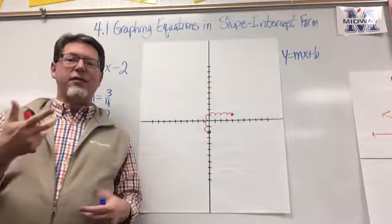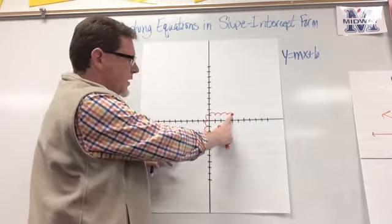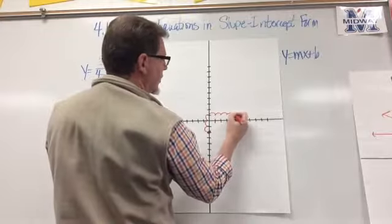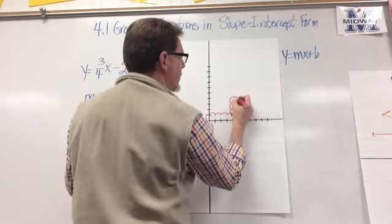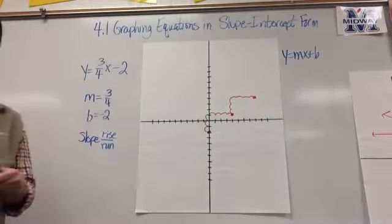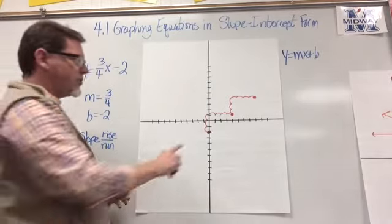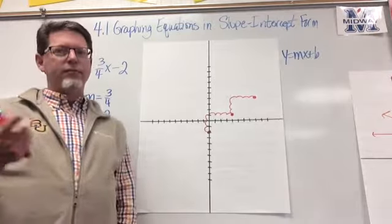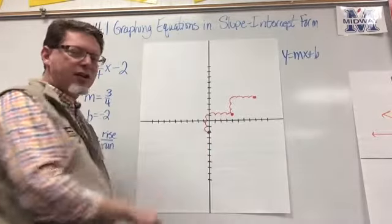Remember, when we graph lines we need at least three points. I have a choice — I can take any existing point and rise and run from there. Since both 3 and 4 are positive, I go up and to the right. That's why the slope works in the upward-right direction — both parts of the rise over run are positive.